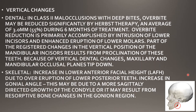For vertical skeletal changes: there is an increase in the lower anterior facial height due to the over-eruption of the lower posterior teeth. Because the posterior teeth get supra-erupted, the lower facial height increases. Then there is an increase in the gonial angle.